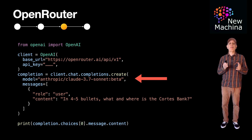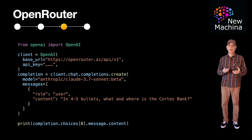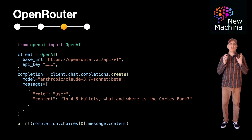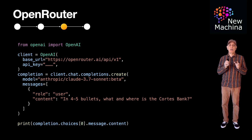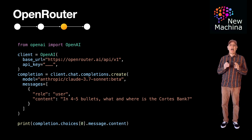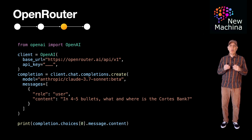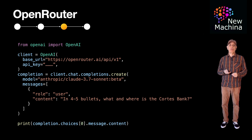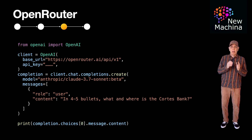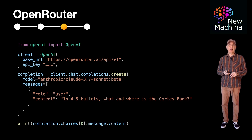Quick note — Cortez Bank is a seamount in the Pacific Ocean that gets to about five or six feet from the ocean surface but doesn't quite come up above it. It's about 96 miles off the coast of Southern California. There have been numerous shipwrecks there over the years, and on large swells when the winds are light, Cortez Bank produces a world-class big wave. Anyway, now that we know what Cortez Bank is, let's get back to OpenRouter and LLMs.